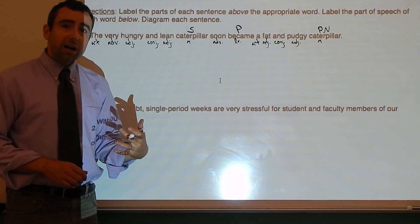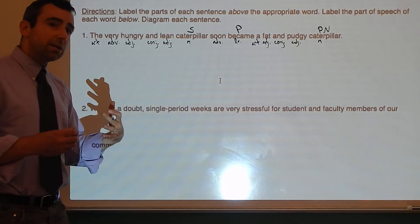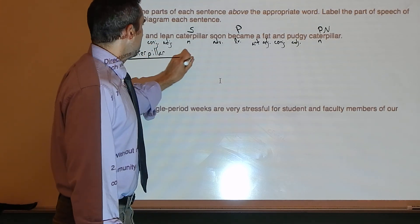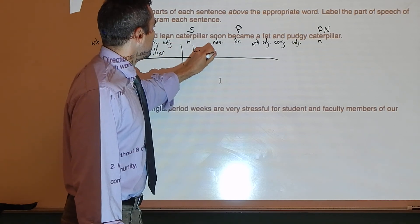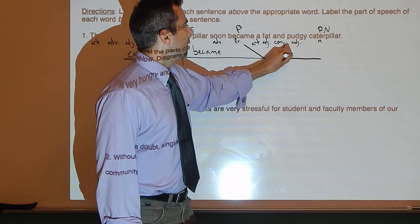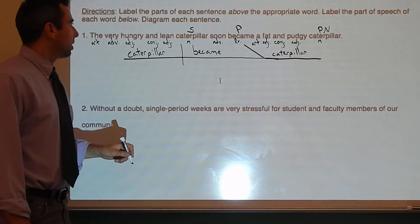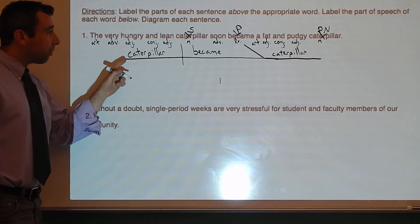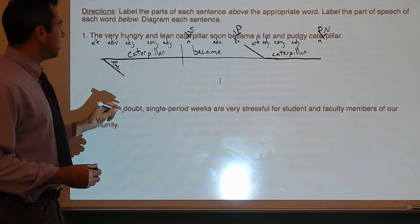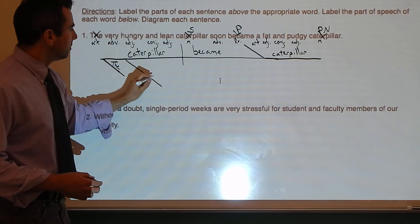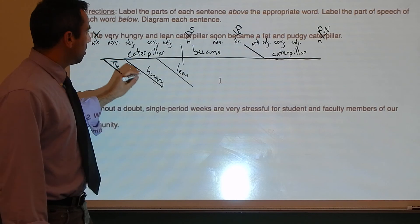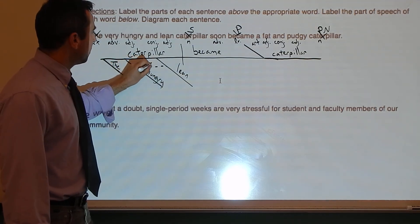Now there's some fun stuff going on in this diagram — some of it is review, some of it may be new. Caterpillar is the subject, became is the predicate, with a backward-slanting line for a linking verb per rule number one, and then caterpillar is the predicate nominative. What do we know about this first caterpillar? It is very hungry and lean. So we write 'caterpillar' on the main line, with 'hungry' and 'lean' joined with a conjunction — and that's not new.